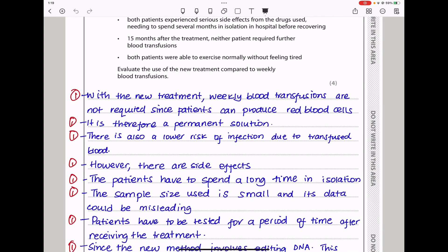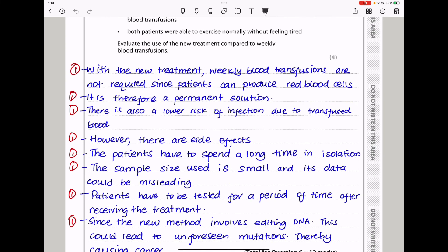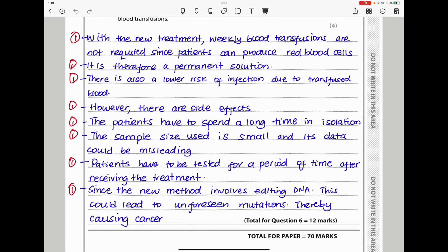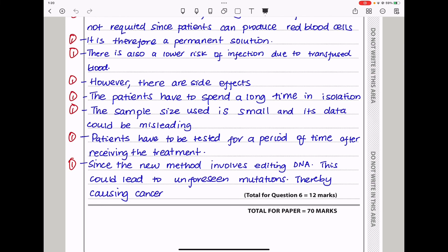Evaluate the use of the new treatment compared to the weekly blood transfusion. I said, with a new treatment, weekly blood transfusions are not required since patients can produce red blood cells. It is therefore a permanent solution. There is also a lower risk of infection due to transfused blood. However, there are side effects. The patients have to spend a long time in isolation. Also, the sample size used is small, just two people. That data may be misleading. These people need to be monitored for longer periods of time. Since the new method involves editing DNA, this could lead to unforeseen mutations, thereby causing cancer.